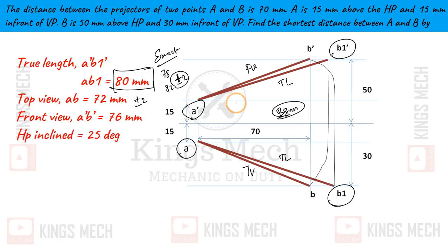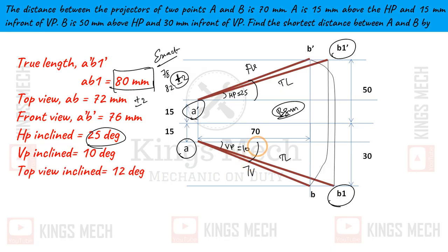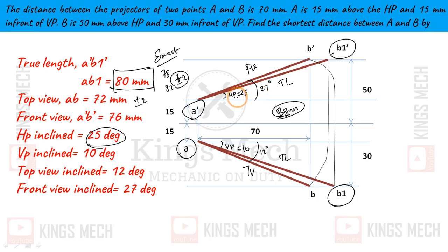The value is 76. HP inclination from true length to HP inclination, and true length to VP inclination. HP inclination is 25 degrees. VP inclination is 10 degrees. Top view inclination is 18 degrees. Front view inclination is 27 degrees. These are all the values.